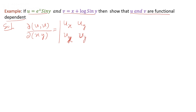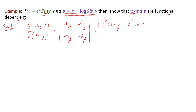We compute the partial derivative of u with respect to x: we get e^x sin y. With respect to y: we get e^x cos y. For v, the partial derivative with respect to x is 1, and the partial derivative of v with respect to y is the derivative of log(sin y), which gives cos y / sin y.